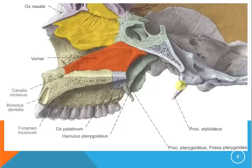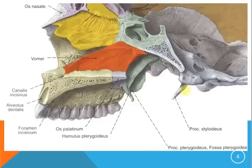This is the processus styloideus of the temporal bone. I want to mention this because it's very important. If you see this process larger than usual, it means that there is a disorder in the body and it's called Eagle syndrome.